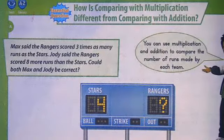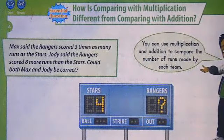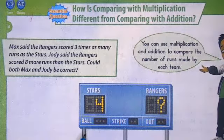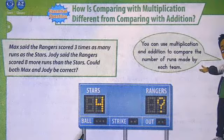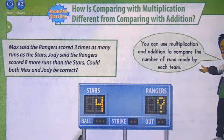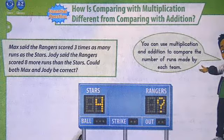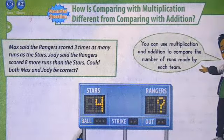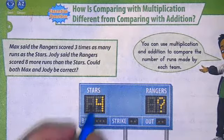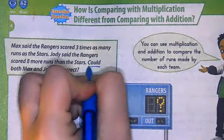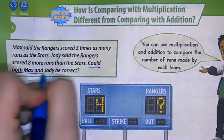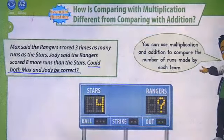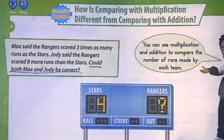To put this into perspective, we're going to look at the story problem in our book. The story problem says Max said the Rangers scored three times as many runs as the Stars. Jody said the Rangers scored eight more runs than the Stars. Could both Max and Jody be correct? I'm going to underline the question that it's asking me to solve.